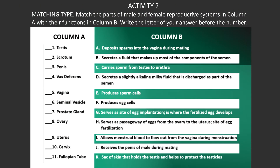Let's reveal the answers. Number one, the testis — it produces sperm cells, letter E. Next is the scrotum — it is a sack of skin that holds and helps protect the testes, letter K. Next is the penis — it deposits sperm into the vagina during mating, letter A. Number four, the vas deferens — it carries sperm from the testes to the urethra, letter C.